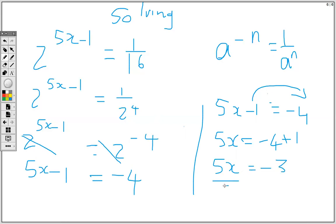Then we divide both sides by 5, so x is equal to negative 3 over 5. And that's it.